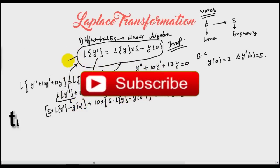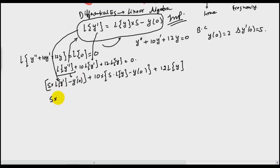Again apply this part to this. So s into—I will write Laplace of first derivative. Now s into Laplace of y minus y0 minus y dash 0 plus 10 times s into Laplace of y minus y0 plus 12 times Laplace of y. This equals 0. Now I will apply the initial conditions, which is the boundary conditions.